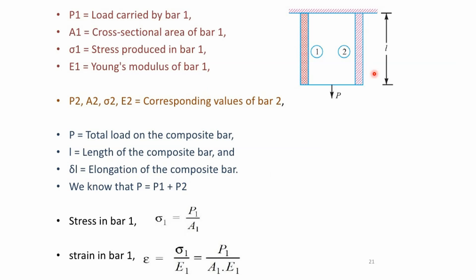The total load is shared by the two bars, so total load P equals load in bar 1 plus load in bar 2. We can find stress in bar 1: sigma 1 equals P1 divided by A1, which is force per unit area. Strain in bar 1, epsilon, equals stress divided by modulus of elasticity. Substituting, epsilon equals P1 divided by (A1 times E1).